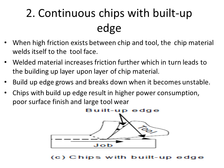Continuous chips with built-up edge occur when high friction exists between the chip and the tool, and the chip material welds itself to the tool face. As friction increases, layers are deposited on the tool face, forming the built-up edge.